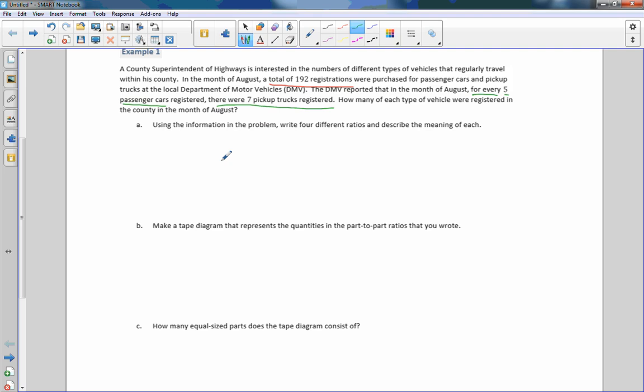It says using the information in the problem, write four different ratios describing the meaning of each. So first thing I would do is, let's say cars to trucks. For every five cars, there were seven trucks. That would be a ratio of five to seven. And that is not the whole. The total is 12.